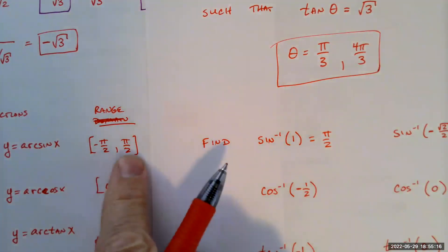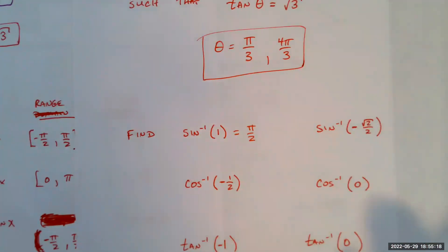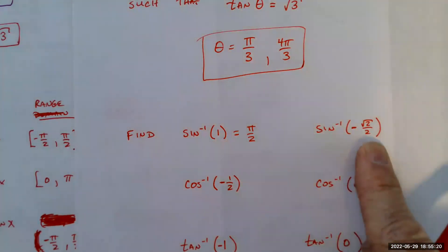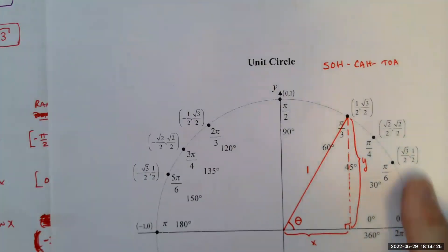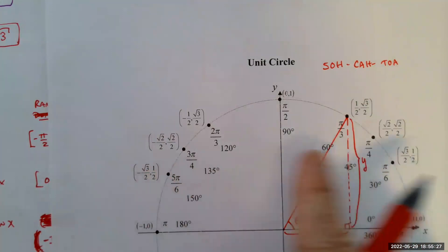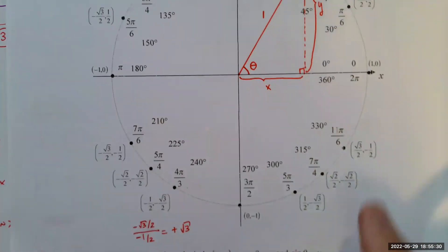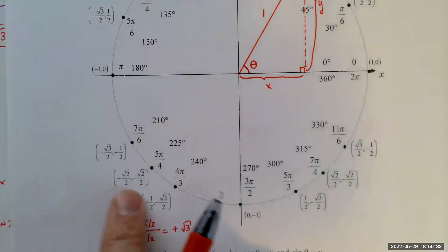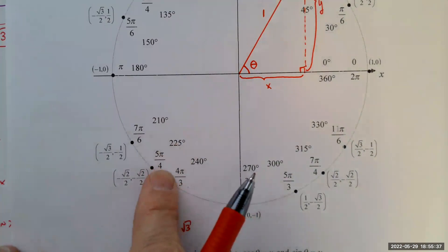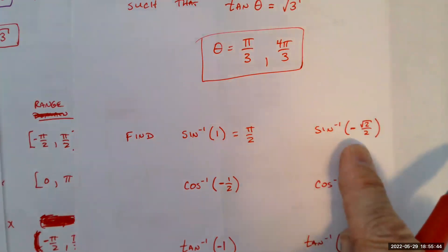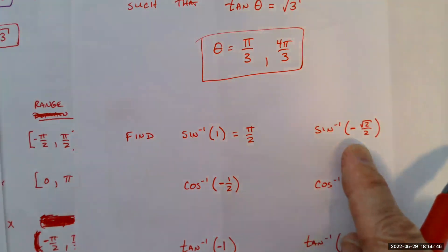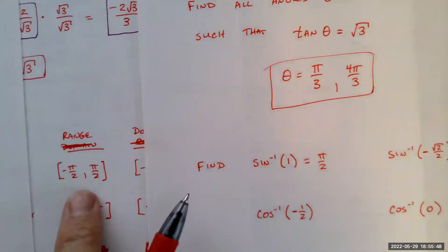What about the inverse sine of negative √2/2? The y-coordinate is negative in the third and fourth quadrants. The sine of 5π/4 is indeed negative √2/2, but the inverse sine of negative √2/2 is not 5π/4, because 5π/4 is not in the required range of negative π/2 to π/2.